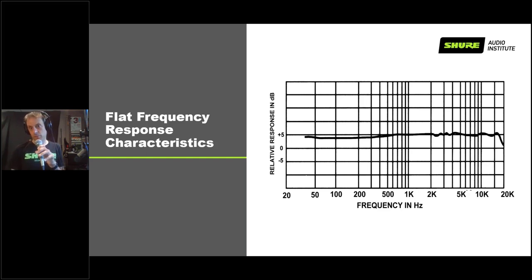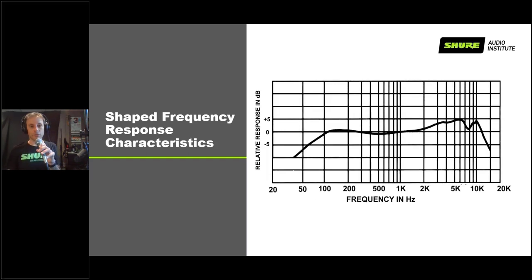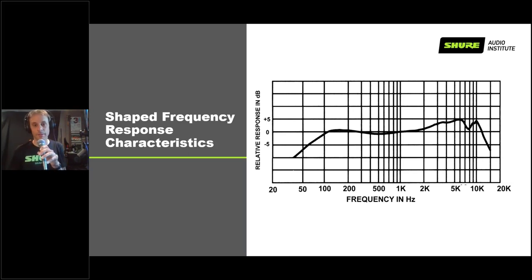You might think you'd always want flat frequency response, but not necessarily. Different sound sources have different characteristics — not all sounds produce all frequencies. For most singers, you don't really need anything below about 100 to 150 Hz; the human voice doesn't generate much energy down there and you'd just end up picking up stage noise, vibration, wind noise, and P-pops. So if you aren't micing something with significant low-frequency content, that range might just muck things up.